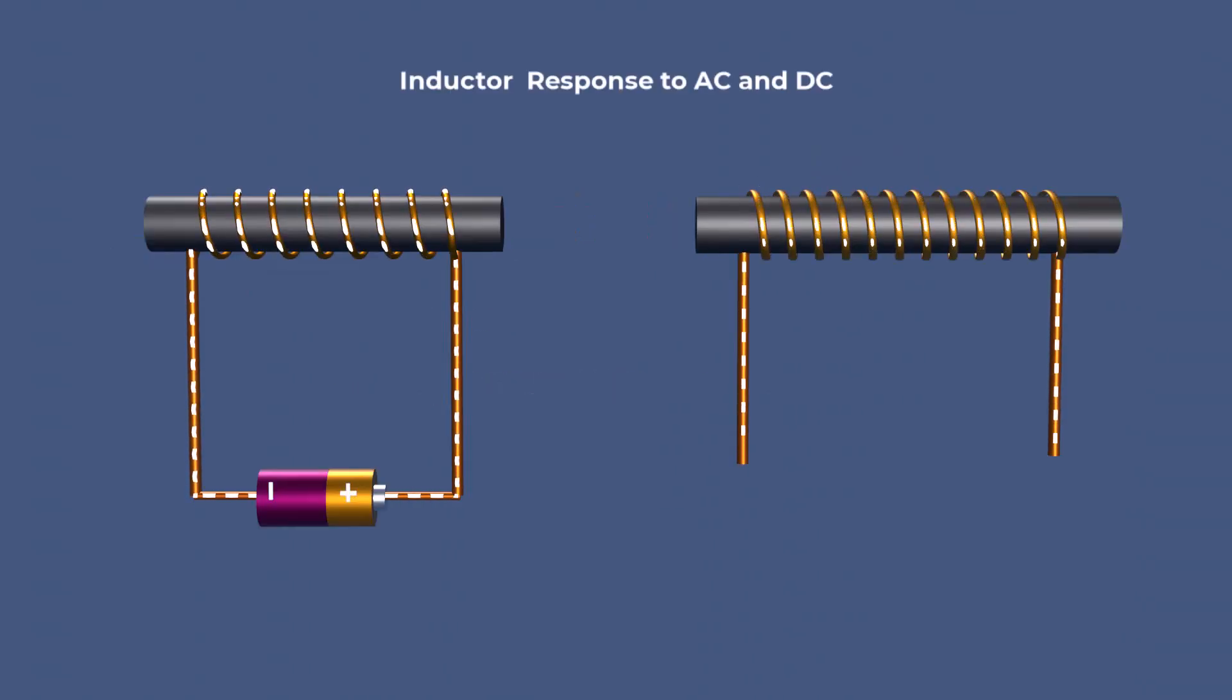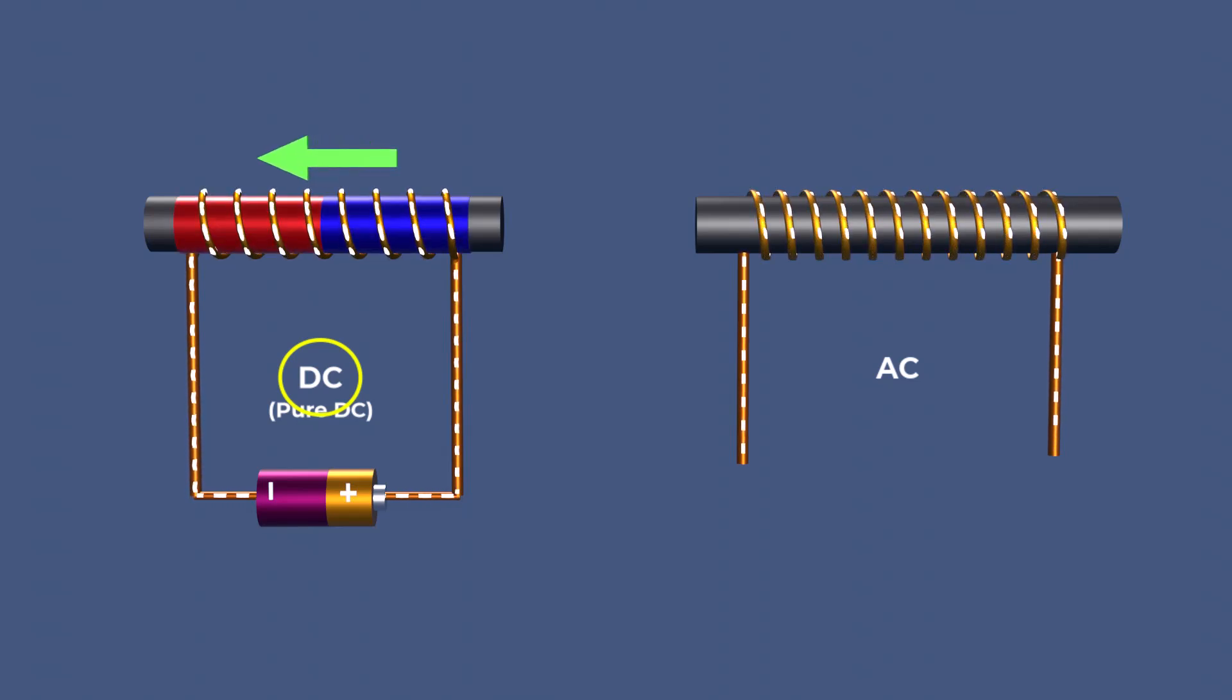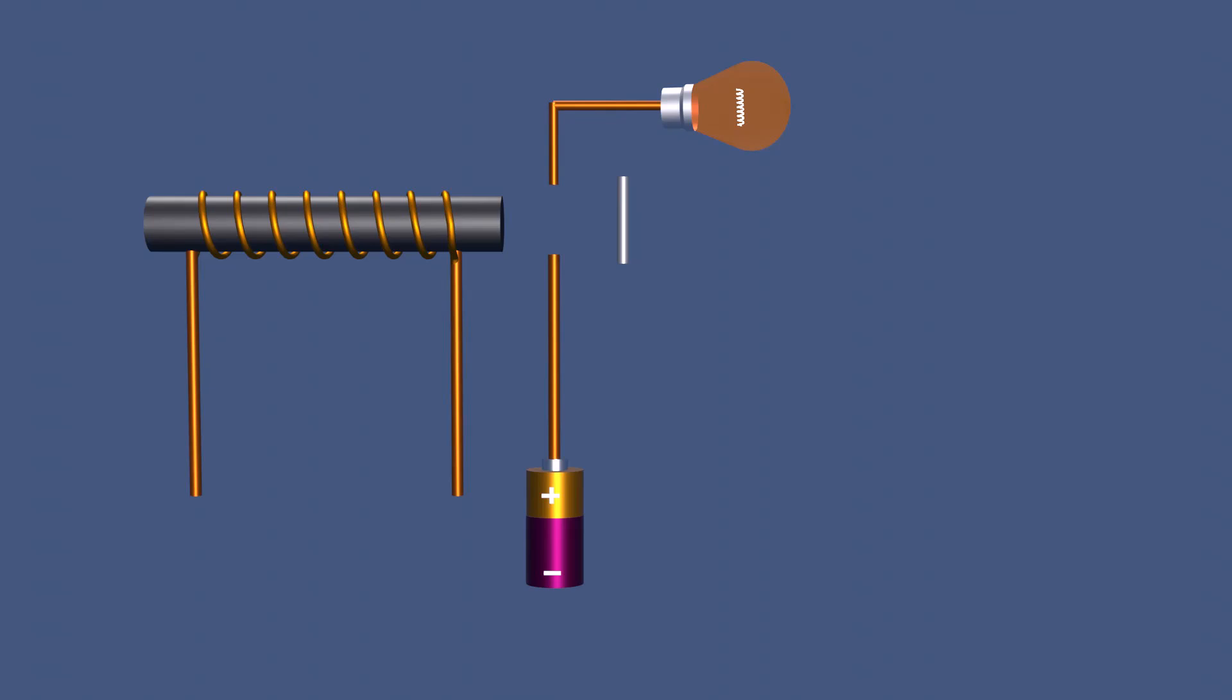Inductors behave differently in direct current and alternating current circuits. In DC circuits, the current flows in one direction, creating a constant magnetic field around the inductor. This makes the inductor behave like a bar magnet with a defined north and south pole. Inductors in DC circuits often act as electromagnets, used in applications like relays and switching circuits.